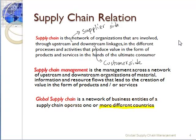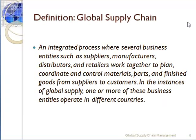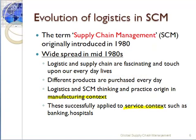Therefore, international trade practices and competitiveness will depend on how we manage the global supply chain. We can derive a definition for global supply chain: it is an integrated process where several business entities — such as suppliers, manufacturers, distributors and retailers — work together to plan, coordinate and control the flow of materials, parts, or finished products from suppliers to customers. This supply chain is named global because the entire supply chain network handles businesses that operate in more than one country. The term supply chain management originates from 1980 and has been widespread since then.